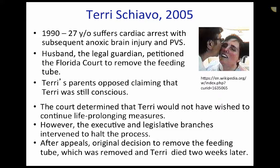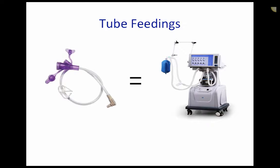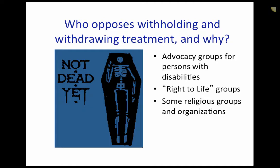The Terri Shriver case upheld the right of the legal guardian to act on a substituted judgment standard to request the right for an incompetent patient to refuse life-sustaining treatments. This case also affirmed an emerging clinical and legal position that enteral and parenteral nutrition and hydration is analogous to other more sophisticated medical interventions, such as the ventilator, that may be withheld or withdrawn according to general principles. Those who oppose such a right to withhold and withdraw treatments include advocacy groups for persons with disabilities, right-to-life groups, and some religious groups and organizations.